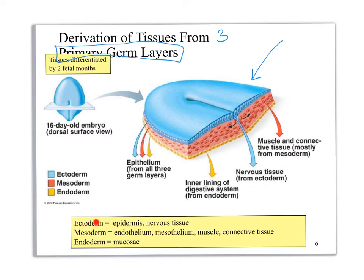The ectoderm will become epidermis and nervous tissue. Mesoderm will become endothelium, mesothelium, muscle, and connective tissue. Endoderm is going to give rise to a lot of the tissues of the mucosae. That's basically what I want you to know on this particular topic.